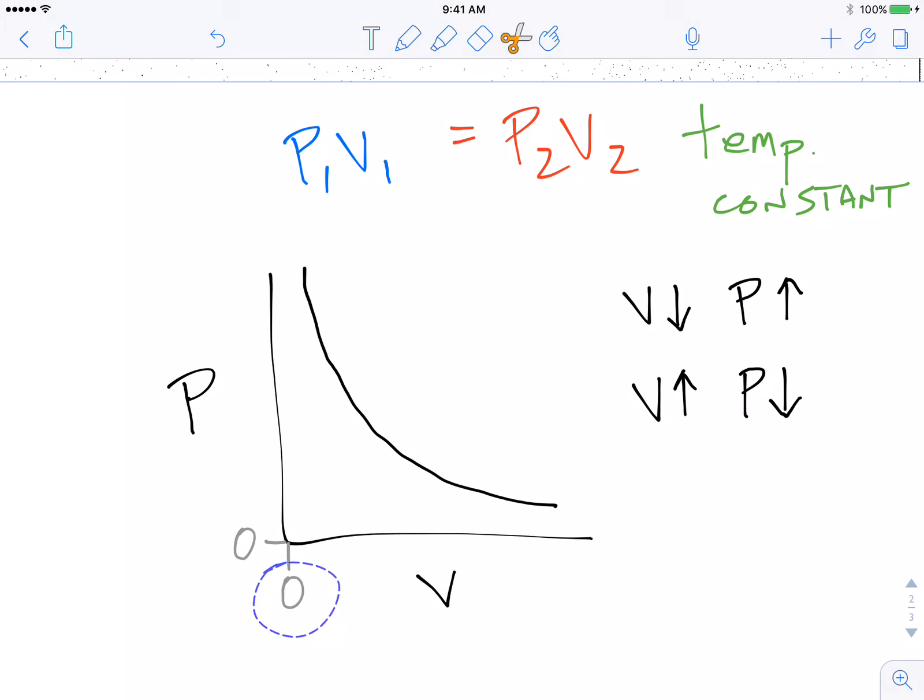Similarly, if we thought, will our line ever reach the x-axis, which would mean having a 0 pressure, as long as you have gas particles in there, the gas particles, when they hit the sides of the container, create pressure. So the only way that you could have a 0 pressure would be if you had no gas in there at all, a vacuum, like out in space.